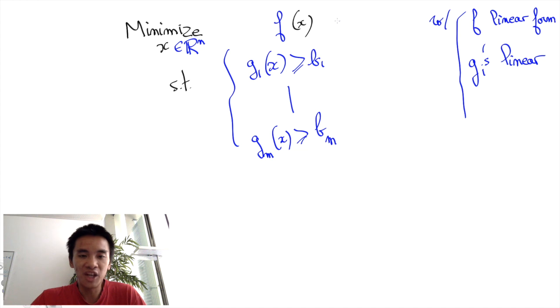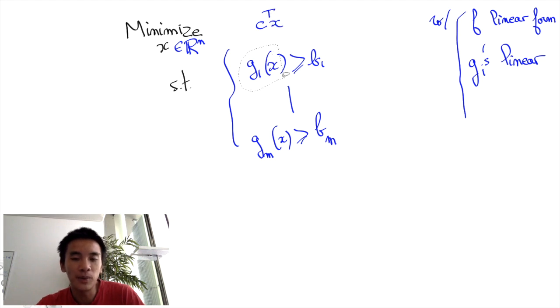Because f and the g_i's are linear, we usually write them using the transpose notations of matrices, i.e., rewrite f of x equals to c transpose x, and g_i of x equals to the ith coordinate of Ax, where A is going to be an m by n matrix.